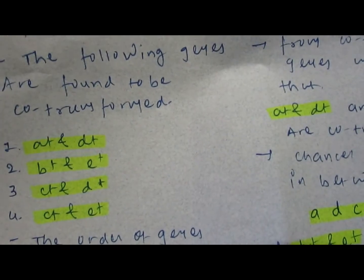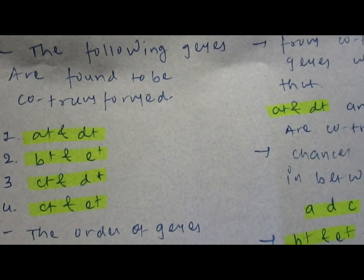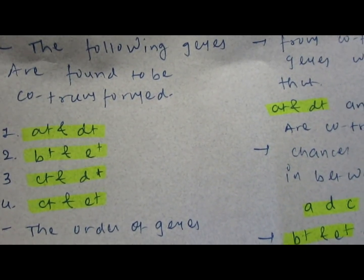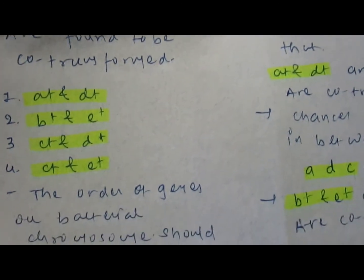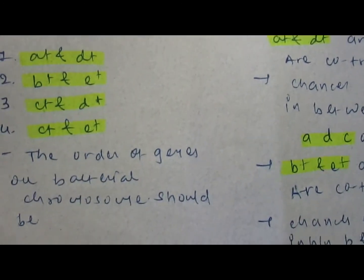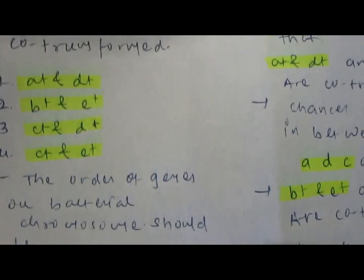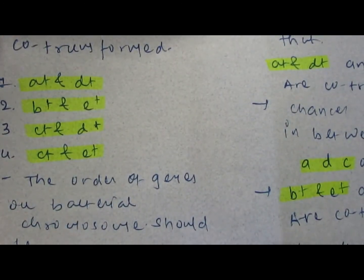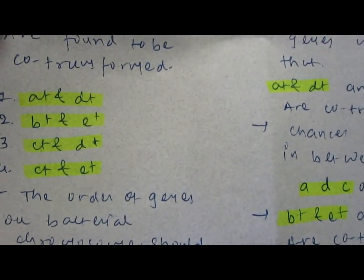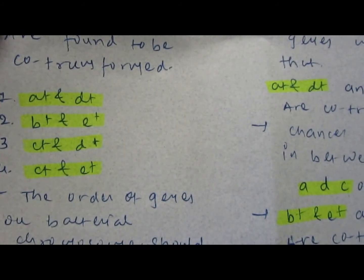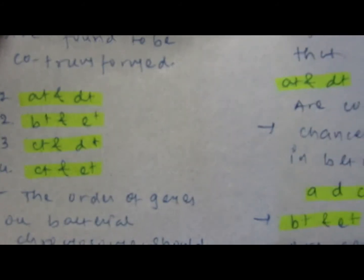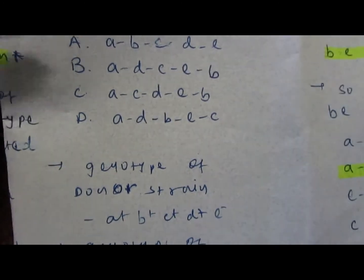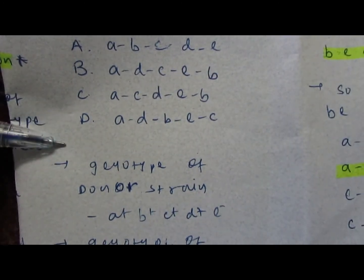Third one is c+ and d+ transformed together, and fourth one is c+ and e+ transformed together. The order of genes on bacterial chromosome should be determined. Based on this we have to select the correct option, which one is the correct gene order for the bacterial DNA transformation.